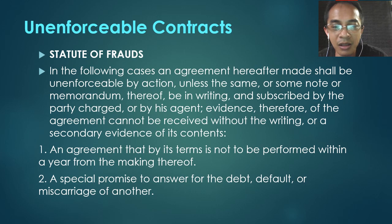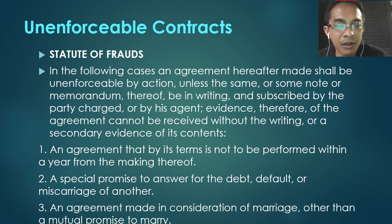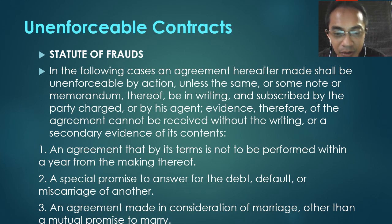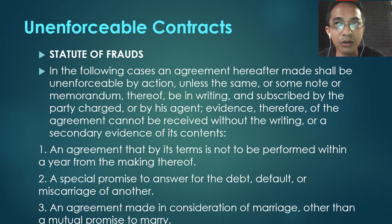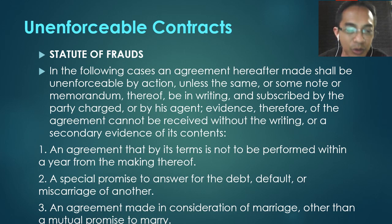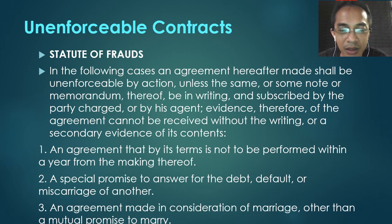Number two, a special promise to answer for the debt or default of another — like a guaranty. Number three, an agreement in consideration of marriage other than a mutual promise to marry. Any agreement in consideration of marriage must be in writing, except a mutual promise to marry — which is not even considered a contract. You cannot force someone to marry you; you can only enforce other agreements made in consideration of marriage.